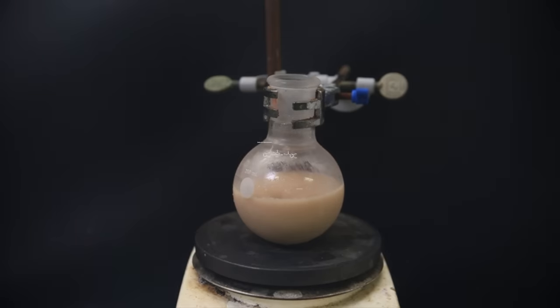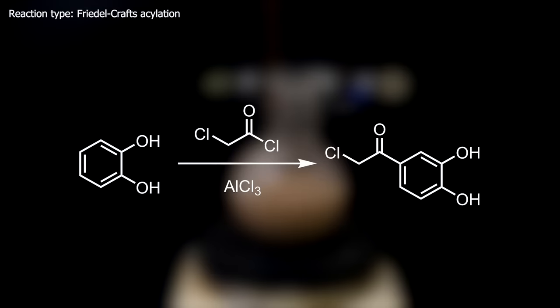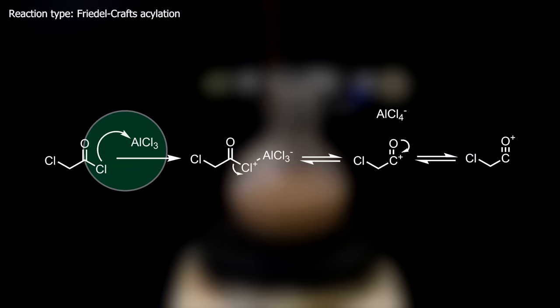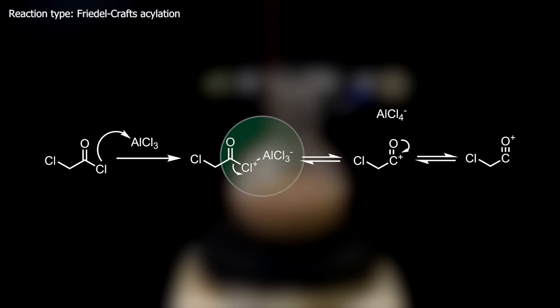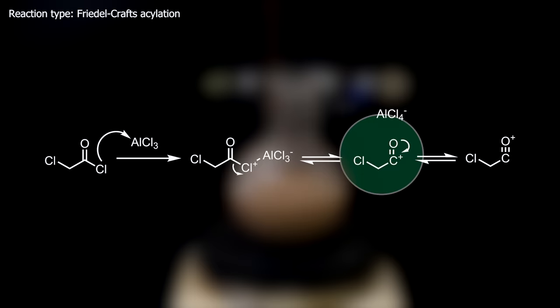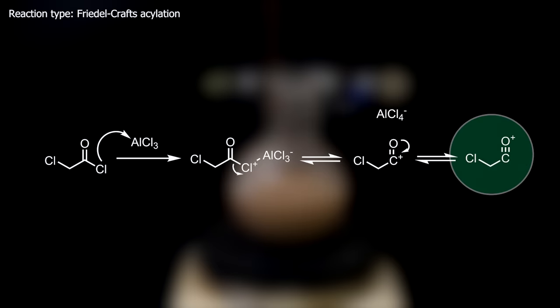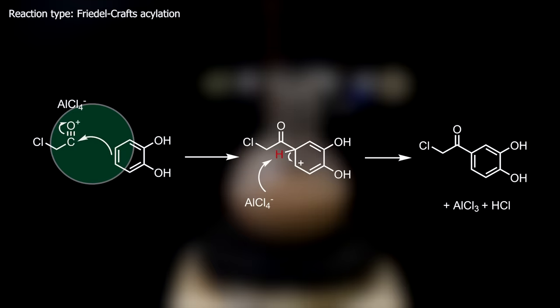This reaction is a typical Friedel-Crafts acylation where aluminum chloride catalyzes the reaction between catechol and chloroacetyl chloride to form 4-chloroacetyl catechol. In more detail, aluminum chloride first coordinates to the acid chloride chlorine, causing both to be kicked off. The resulting intermediate is an acylium ion which is resonance stabilized. The acylium ion carbon is attacked by the aromatic ring of catechol, forming an intermediate.